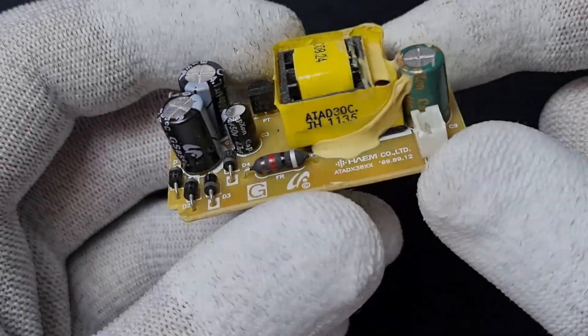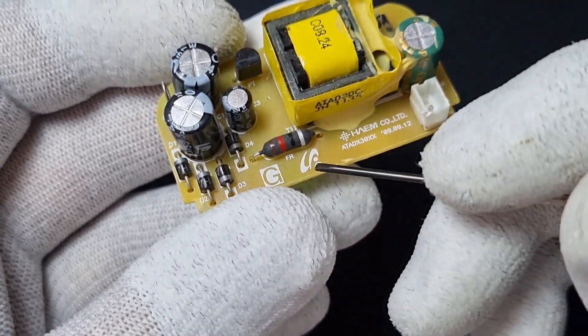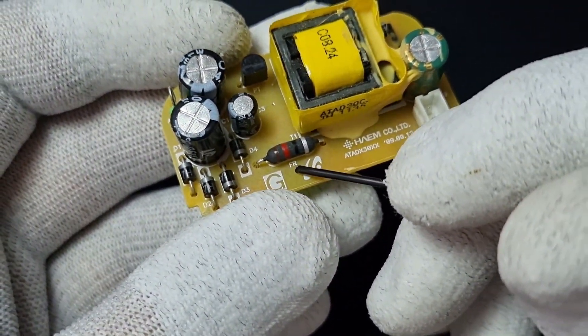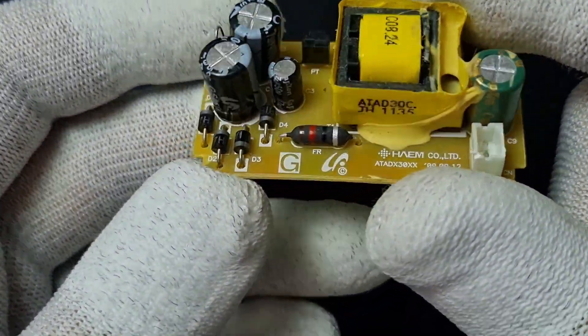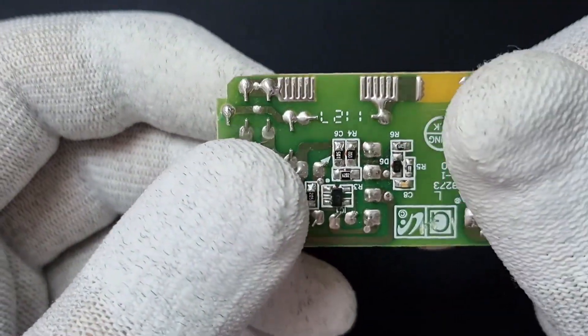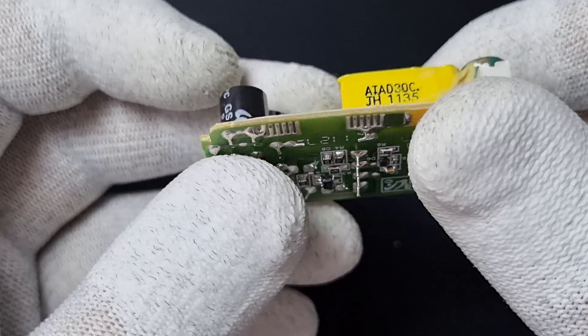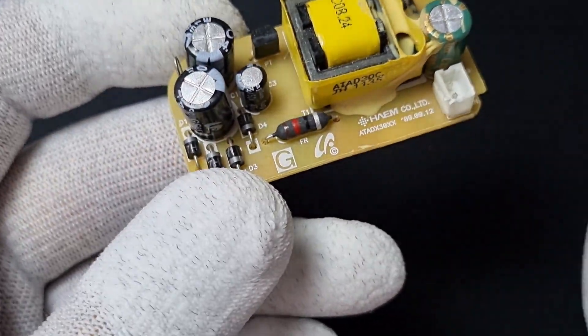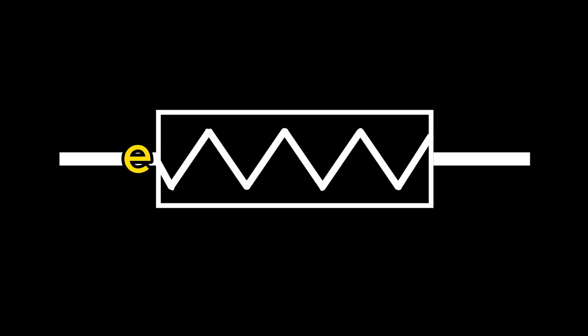Let's start with fusible resistors. This component serves both as a resistor and a fuse, typically used on the input side of power supplies. When functioning normally, they limit current in the circuit like any other resistor. However, if the current exceeds a certain threshold, the fusible resistor is designed to open the circuit, effectively acting as a fuse to protect other components.